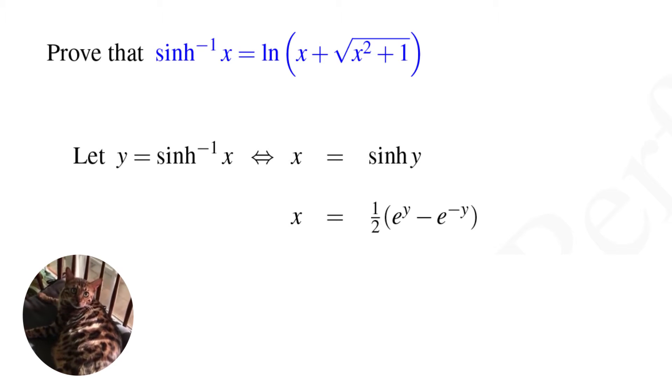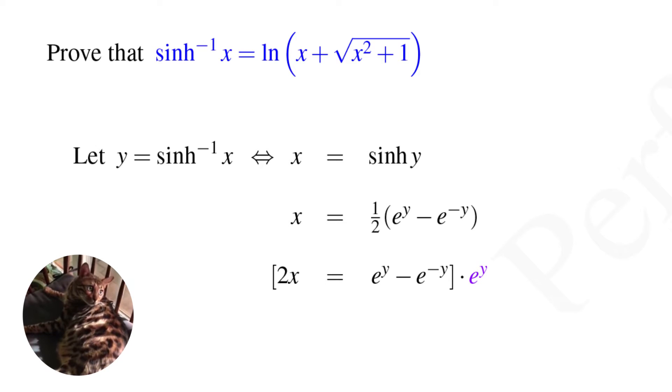So we have the equality x equals one-half the quantity e to the y minus e to the minus y. The first thing I like to do is get rid of the fraction, so let's multiply this equation through by two, which yields the equation 2x equals e to the y minus e to the minus y.